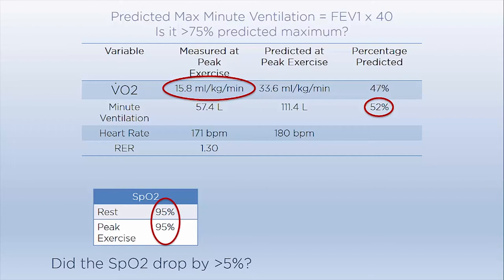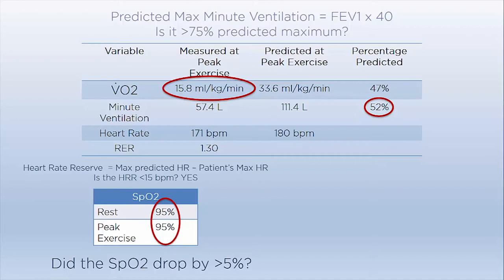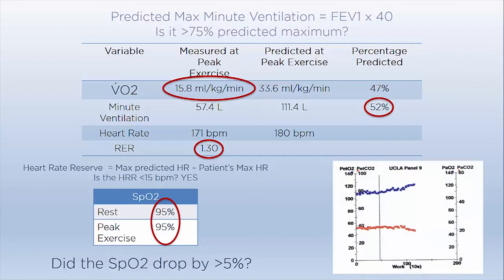Heart rate is the next important variable. We look at the patient's maximum heart rate and the predicted maximum heart rate. The difference between the two is called heart rate reserve. Heart rate is said to have reached its limit if heart rate reserve is less than 15 beats per minute. In this case, the heart rate did reach its maximum limit. Next, we analyze the respiratory exchange ratio — it increased above 1.15, showing the patient exercised beyond the anaerobic threshold. Metabolic acidosis prevents one from continuing exercise. The ETCO2, used as a surrogate for PaCO2, helps us determine if metabolic acidosis developed too soon. In this graph, the ETCO2 did start decreasing, again indicating the exercise limitation is cardiovascular.